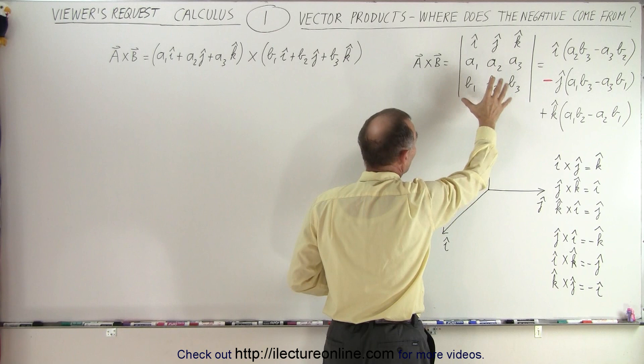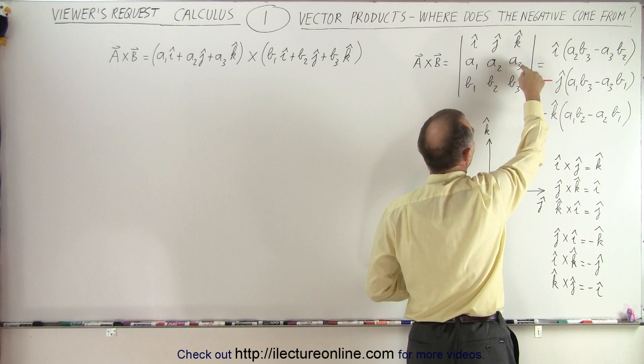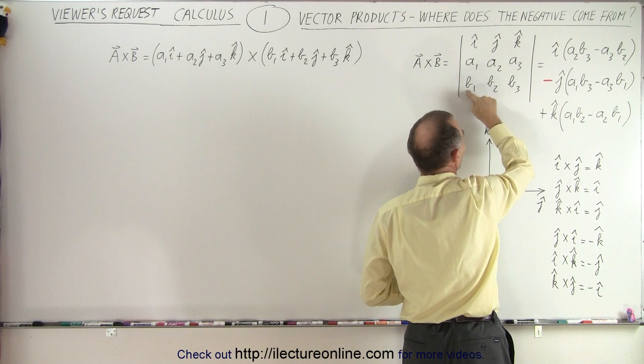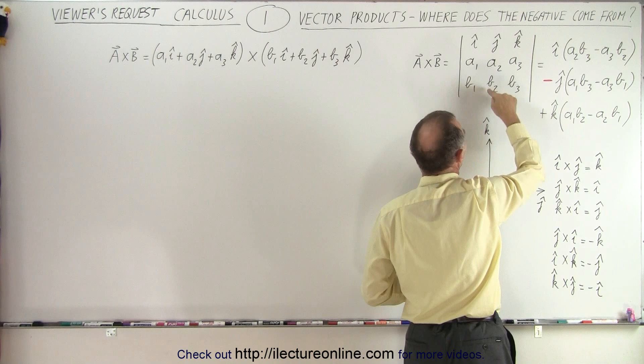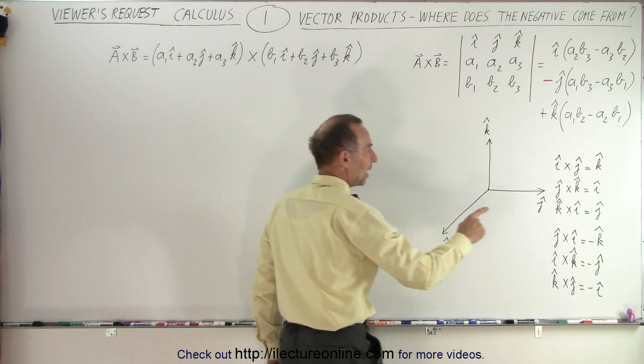Let's say we have two vectors A and B. We can write them in matrix format as a cross product. The result is: we take the I unit vector times A2·B3 minus A3·B2, then the negative of the J unit vector times A1·B3 minus A3·B1, and finally plus the K unit vector times A1·B2 minus A2·B1. The question was: why is this negative? Where did that negative come from?